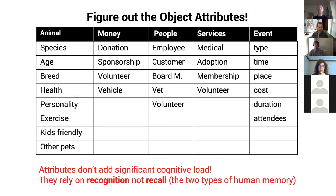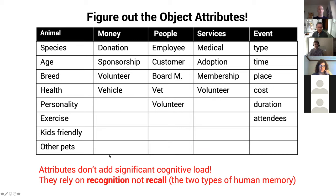Now the next step is figuring out the attributes. Obviously an animal has a species and a breed and an age, and more importantly it has some personality characteristics which would allow you to match it to a human being and their need. This is a trivially small table of attributes — it actually gets very large and attributes can be hierarchical. Objects have relationships and they can be many-to-many or many-to-one. Sometimes a primary object can still behave as an attribute of another object. What's important about attributes is they don't add significant cognitive load — that's another really key point in the semantic method.